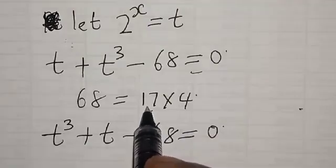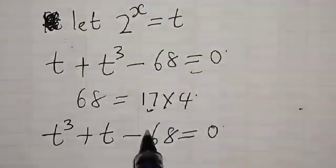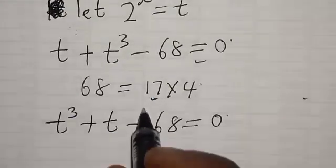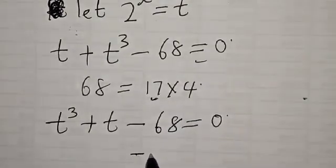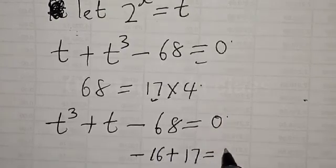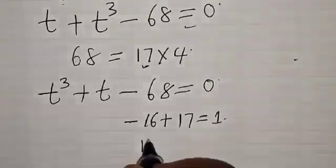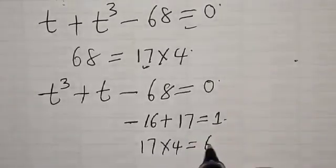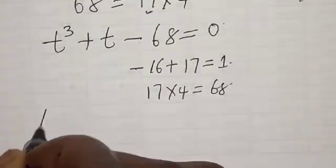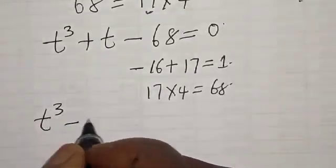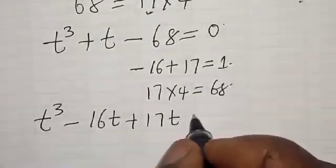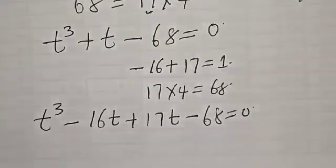And we know that 68 is equal to 17 times 4, where 17 is the largest value. Then in order to get the value of t, because the coefficient of t here is 1, we need to split the middle term as minus 16 plus 17, which gives you 1. And we know that 17 multiplied by 4 is equal to 68. Then our equation becomes t cubed plus t squared minus 16t plus 17t minus 68 is equal to 0.